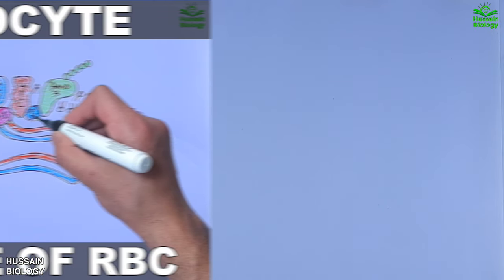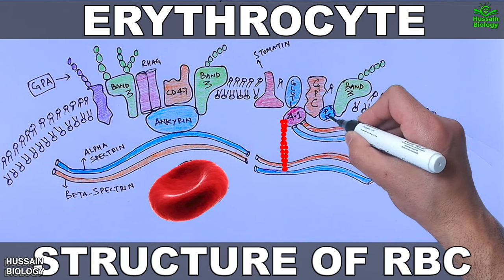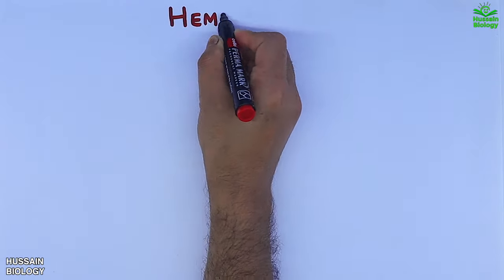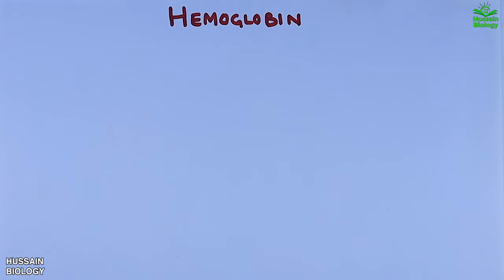In the previous video we discussed about the erythrocytes — if you want to watch that video first, the link is in the description. Now in this video we are going to discuss about hemoglobin, its structure, types, and the diseases associated with it.